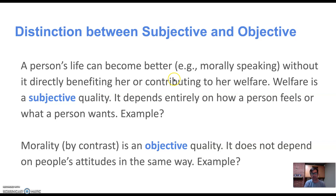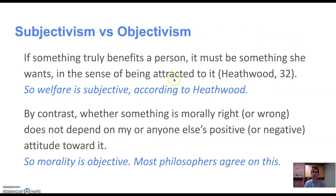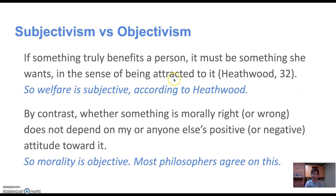You can think about different qualities and whether they are more subjective or more objective. Heathwood is committed to the view that welfare is subjective — it's more like whether something tastes good, which is certainly a subjective quality. The tastiness of a cheeseburger depends on subjective facts about me; there's no objective fact about whether cheeseburgers are tasty. Similarly, he wants to say whether something benefits me depends on my desires, on subjective facts about me — there's no objective measure of what benefits me or makes my life better. By contrast, whether something is morally right or wrong does not depend on my attitude toward it.